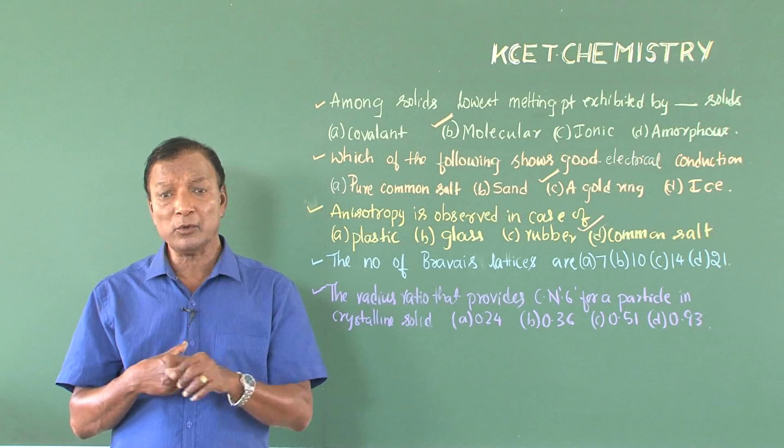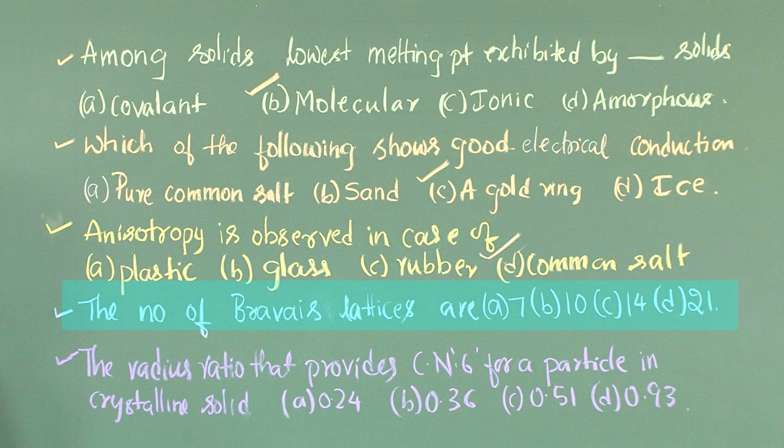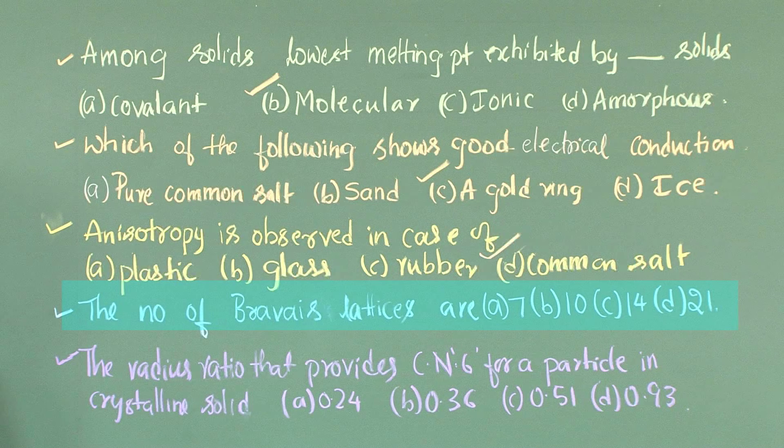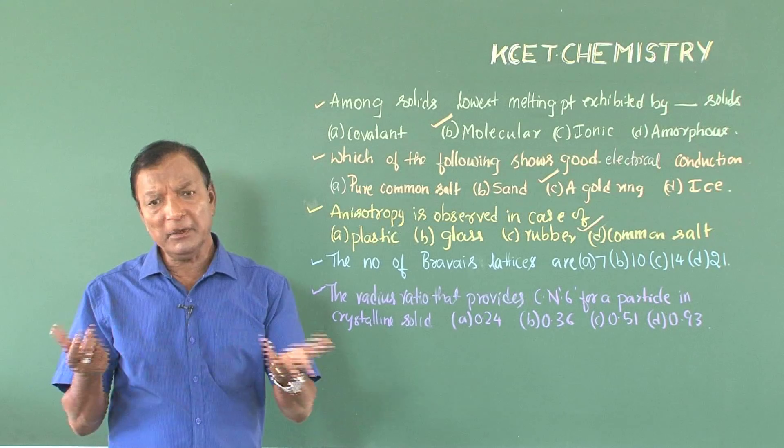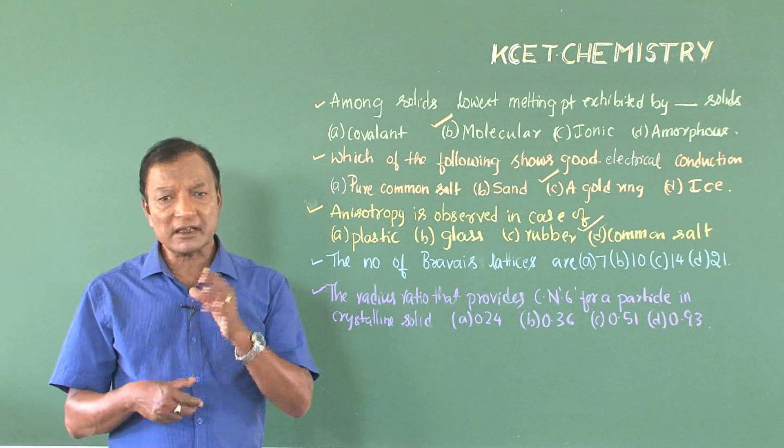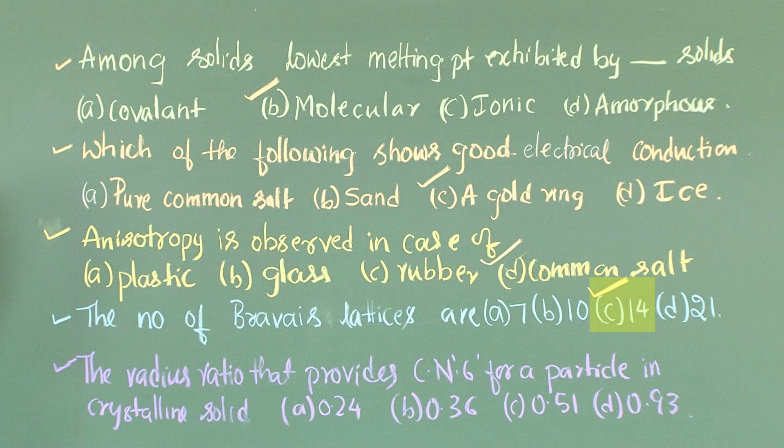Now the question becomes so simple: the number of Bravais lattices are 7, 10, 14, or 21? Immediately, we put the option with respect to C reading 14, because there are 14 Bravais lattices built up from 7 crystal systems.